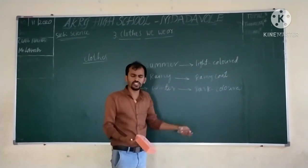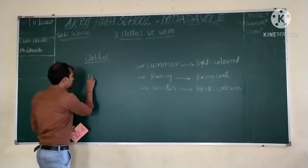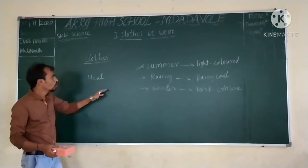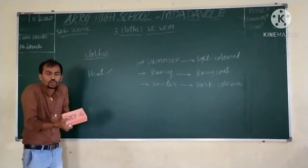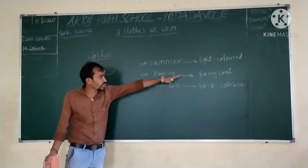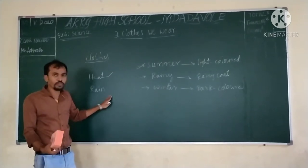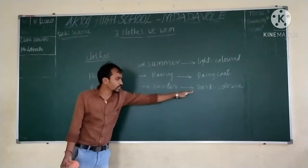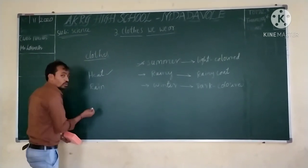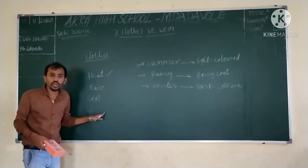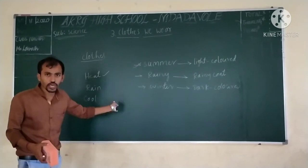What is the purpose of wearing all these different kinds of clothes? Is there any use for this? Yes, definitely. During summer there will be so much heat. So if you wear light colored clothes, that will protect us from heat and keep us cool. And when it comes to rainy season, the raincoat will help us from the rain, which will prevent us from becoming wet. And when it comes to winter, dark colored clothes will prevent us from feeling cold.